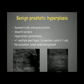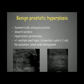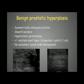Benign prostatic hyperplasia appears as a symmetrically enlarged prostate — it can become very large. The borders will remain smooth and the parenchyma will remain iso- to hypoechoic. In this example the parenchyma is quite hypoechoic and we see multiple small hypoechoic cysts within the parenchyma, generally measuring less than one centimeter.